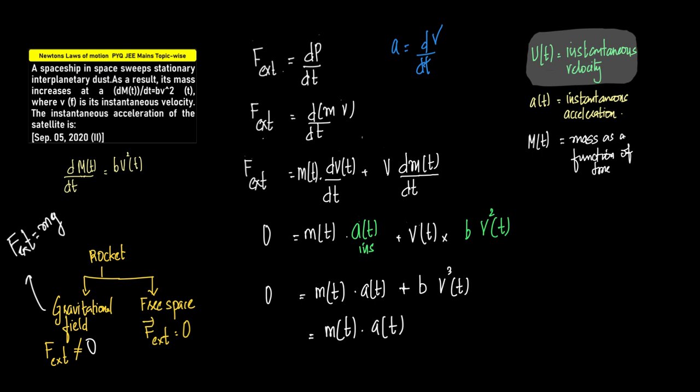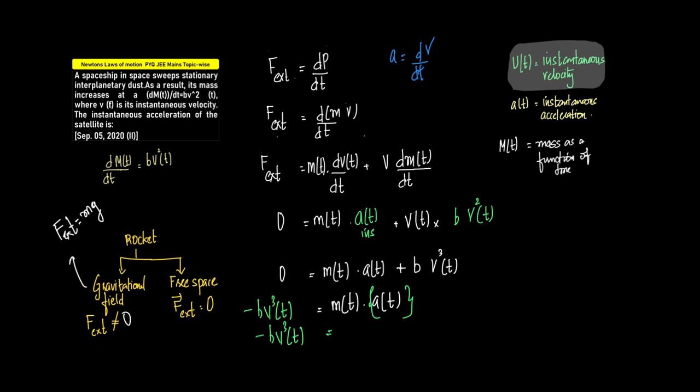So we have a of t, b v square of t. Now what I'll do is first let me just multiply these two terms. So now this becomes v of t into v square of t, which becomes v cube of t. So what we get here is minus b v cube of t is equal to m of t into a of t, and we've been asked to find out instantaneous acceleration. So this basically becomes minus b v cube of t, the whole upon m of t. So the correct answer is minus b v cube by m of t. That's option C.